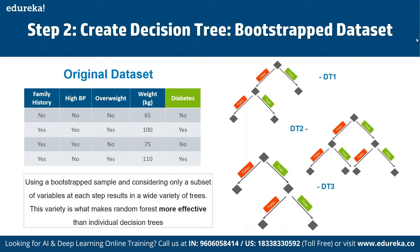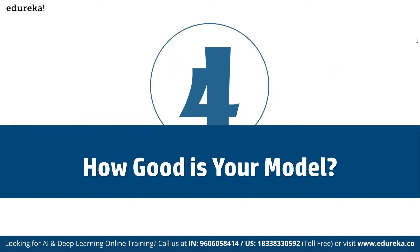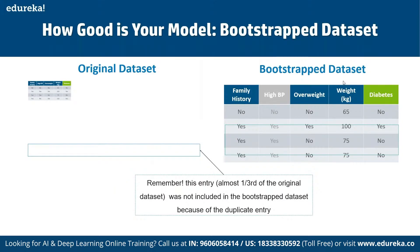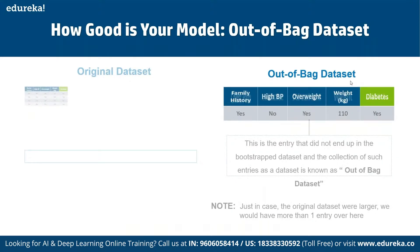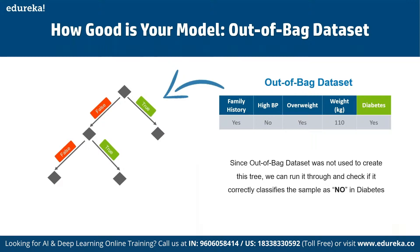To use the random forest for prediction — for example, predicting if a patient has diabetes: we run the sample through all the trees and collect votes. If most votes say 'yes', the patient has the condition. Let's say we create 100 decision trees and count predictions from all of them. We find the option that receives the most votes. We also evaluate model accuracy using out-of-bag (OOB) data — roughly one-third of the original data set not included in the bootstrap due to duplicate entries.